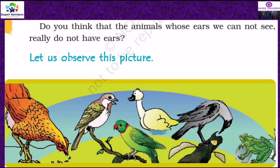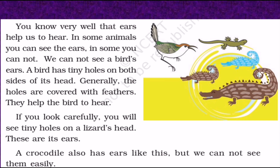Do you think that animals whose ears we cannot see really do not have ears? You might be thinking — for example, birds' ears are not visible, so whether they have ears or not is a question. You can see the frog — the ear is not visible, but does the frog have ears? In some animals you can see the ears, in some you cannot. A bird has tiny holes on both sides of its head. Generally the holes are covered with feathers, which help the birds to hear. That's why it is not visible, but they do have ears.